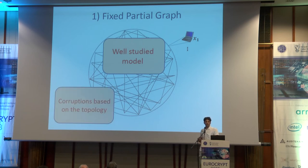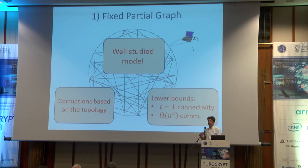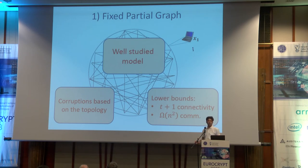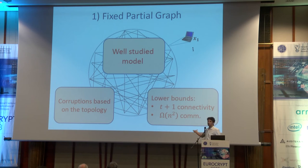Corruptions of the parties can be a function of the topology in this case. As a result, we have many hard lower bounds. Even if we just want to broadcast a message, the connectivity must be t plus one, where t is the number of corruptions. And if we have a linear number of corruptions, the communication complexity is quadratic in the number of parties.